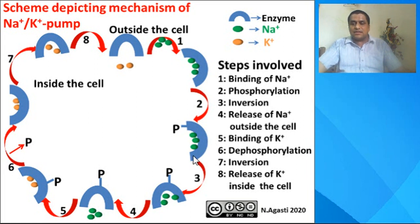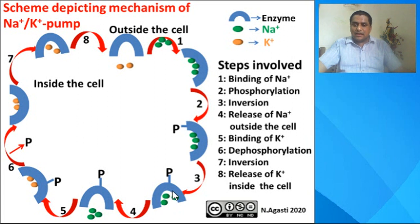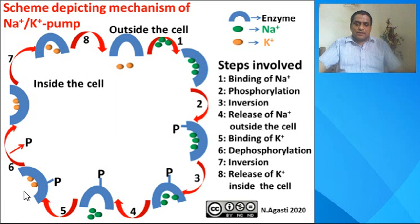In the third step, there is an inversion taking place — the shape of the enzyme is inverted. The three sodium ions which are bound to this enzyme are released outside the cell. You can see the three sodium ions represented by green circles being released outside the cell. Next, potassium ions present outside the cell bind to this free enzyme. Once the sodium ions are released, the enzyme is free, and this free enzyme then binds to the potassium ions.